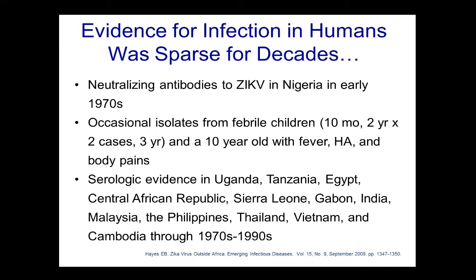After those early reports of Zika infection in humans, there were just sporadic case reports over the next 20 to 30 years — a case here, a case there. Occasional isolations of the virus from febrile children, including a 10-year-old with fever, headache, and myalgia. As serologic assays became available, evidence emerged of infection working through other regions of Africa, then to the Philippines, Thailand, Vietnam, and Cambodia through the 1970s and 1990s.